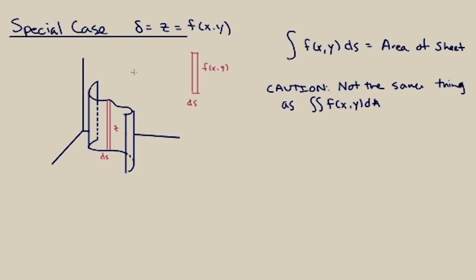And the height here is variable. Then one of these little slices, the area of one of those little slices would be approximately f ds. So if you added all of those up you get approximately the area of the sheet. I just want to point out that this is something that is very different from the double integral with respect to the area differential. You really got to pay attention to what comes at the end of these integrals because they mean entirely different things.